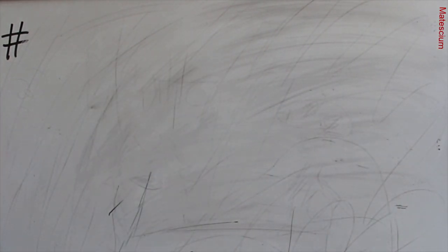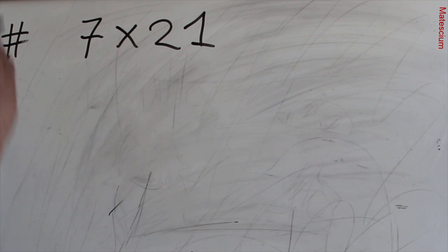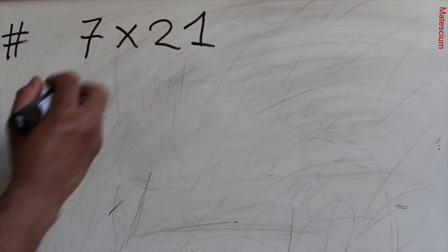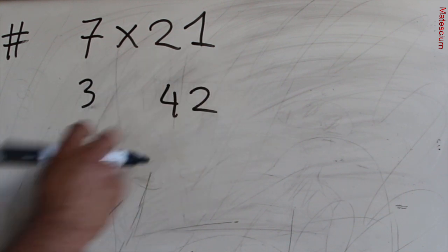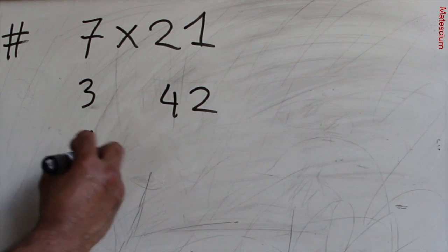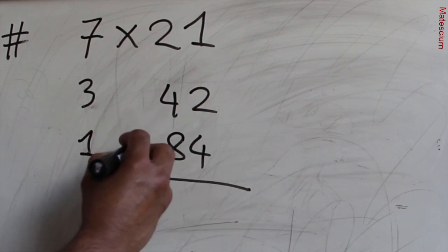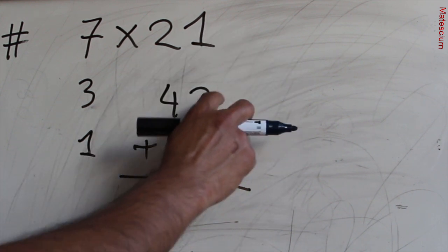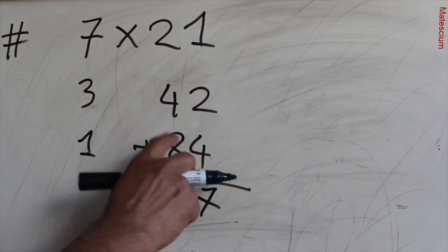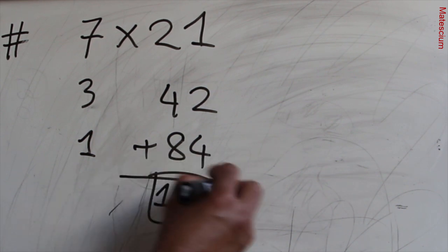Let's consider another example: 7 multiplied by 21. Half of 7 means 3.5 — as I told you, do not consider the fractional number, only consider the integer, so half of 7 is 3. Double of 21 means 42. Half of 3 means 1.5 — we write 1. And double of 42 means 84. Now add these three numbers: 21 plus 42 plus 84. 4 plus 2 is 6, 6 plus 1 is 7, and 8 plus 4 is 12, 12 plus 2 is 14. That means 147 is the answer of 7 times 21.